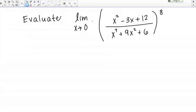Let's use concepts from continuity to evaluate this limit. We have the limit as X goes to 0 of the quantity X squared minus 3X plus 12 all over X to the 4th plus 9X squared plus 6, and that entire rational function is raised to the 8th power.